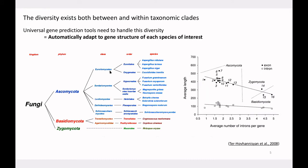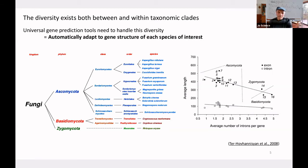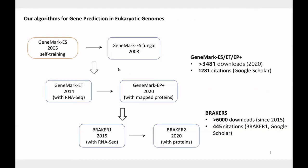This diversity is not just between taxonomic clades but also within them. If we zoom in on the tree of life and look only at fungal genomes, we still see significant diversity. For example, the average number of introns per gene ranges from near zero — some fungal genomes have almost no introns — up to an average of five introns per gene. To handle this, an algorithm that automatically predicts genes in a novel genome needs to adapt to all these differences in gene structure.